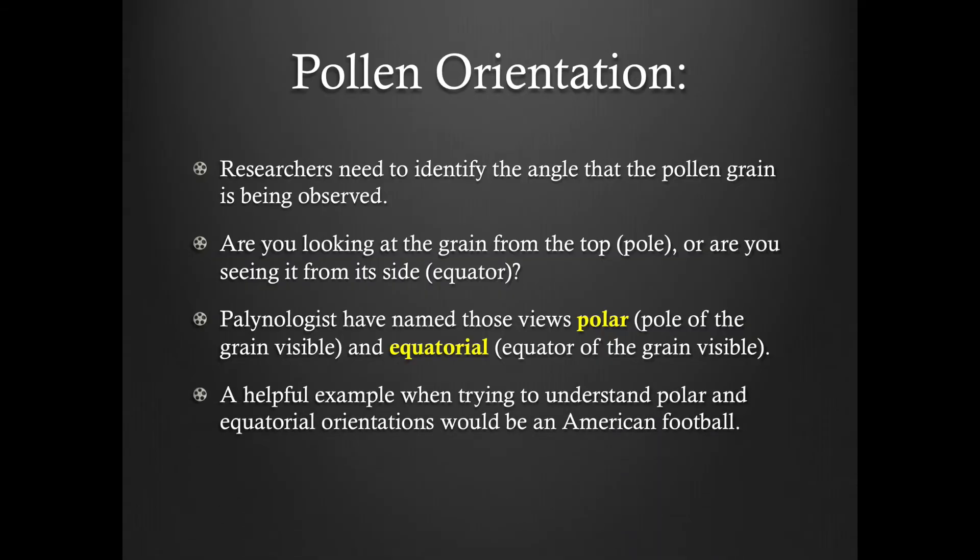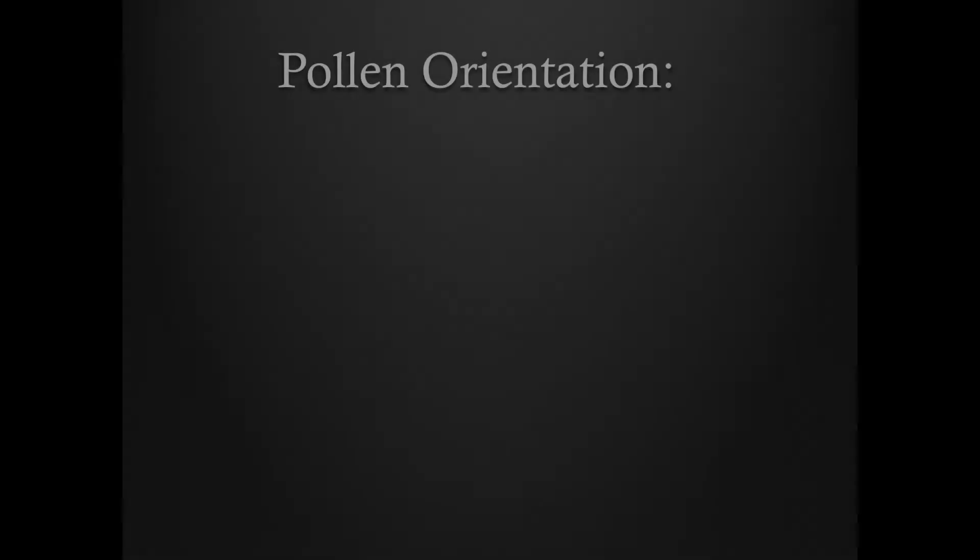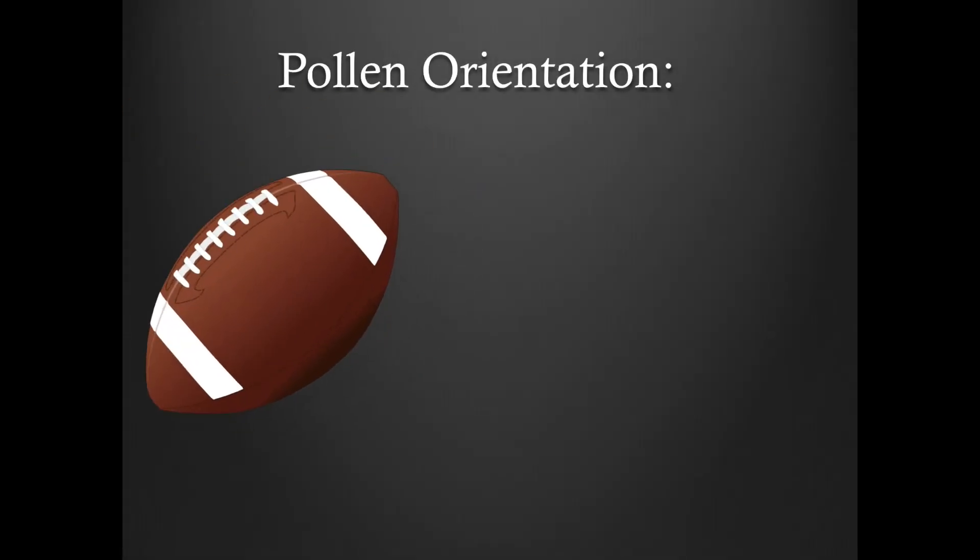To help better understand polar and equatorial orientation, let's use the example of an American football. Imagine holding a football in a position where the lacing is directly visible. If this football were a pollen grain, this would be an equatorial view.